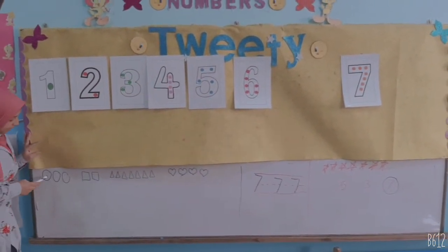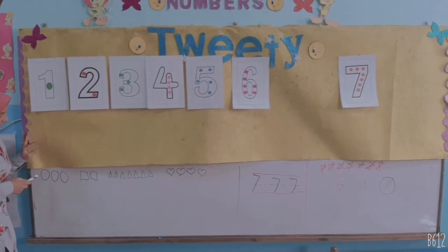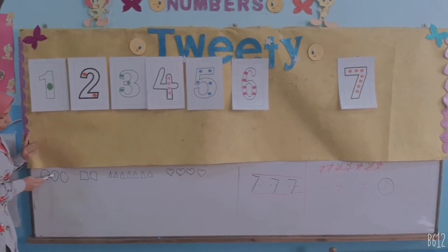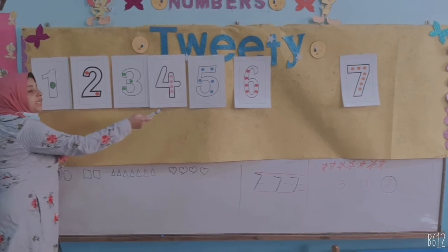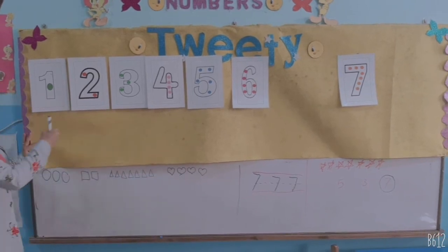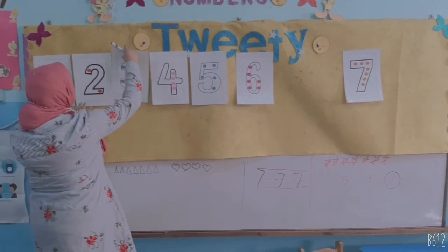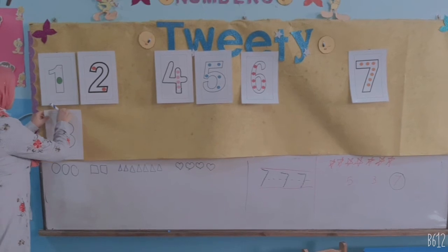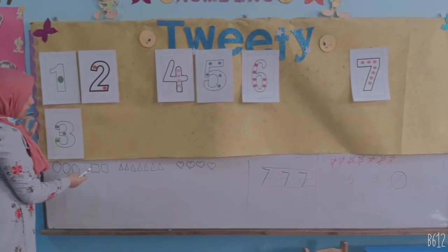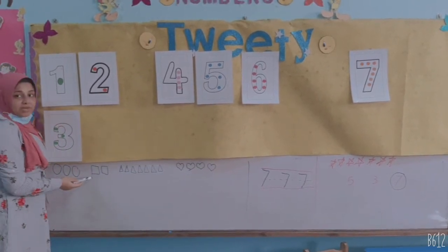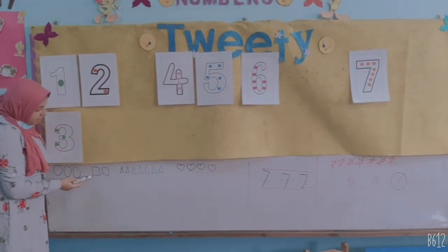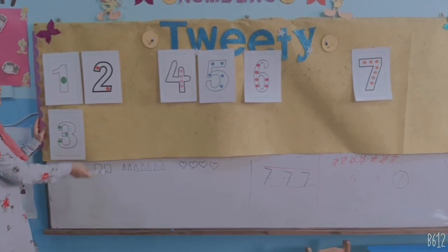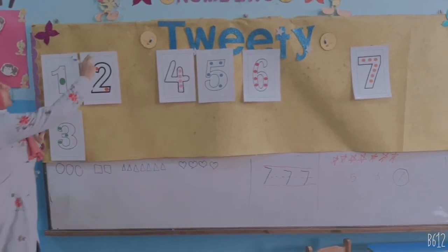Count to me. How many circles are there? 1, 2, 3. Where is number 3 here? How many squares are there? 1, 2. Where is number 2? This?